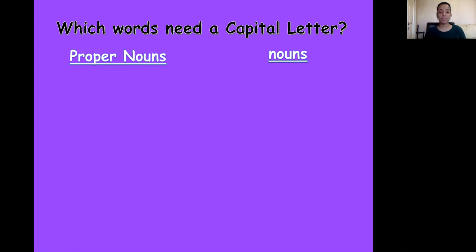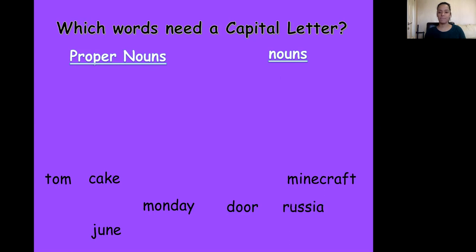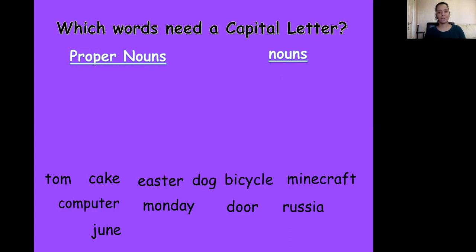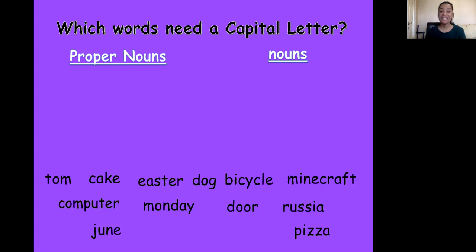Let's get started with some examples: Tom, Minecraft, door, cake, June, Monday, Russia, dog, Easter, computer, bicycle, pizza. Tom — is it a proper noun or just a noun? It is the name of a person, or it could be a pet, so we would give it a capital letter. It becomes a proper noun. What about cake? Cake is a type of food, so we would just leave it as a noun. It is not a proper noun. It does not need to be capitalized.